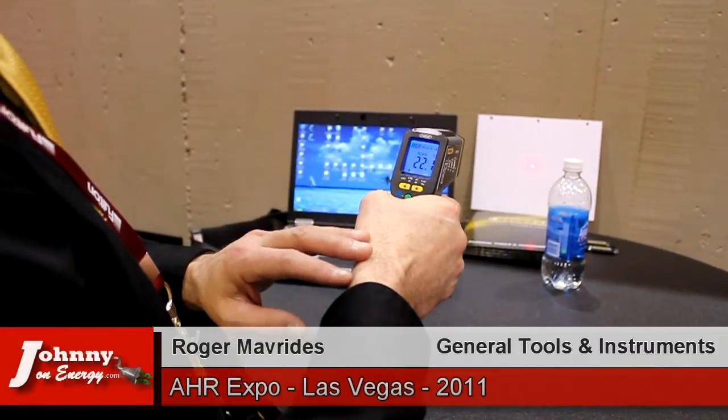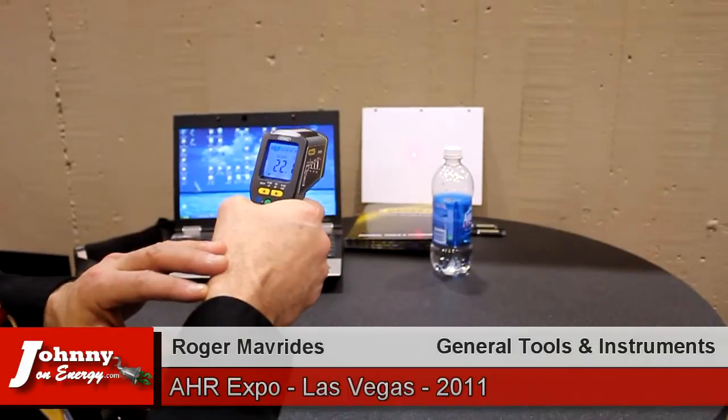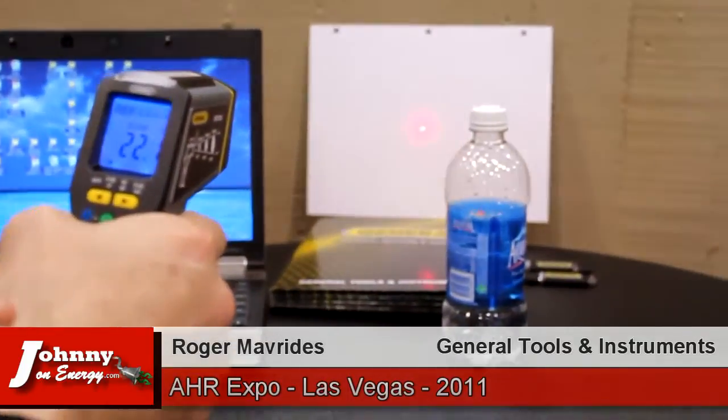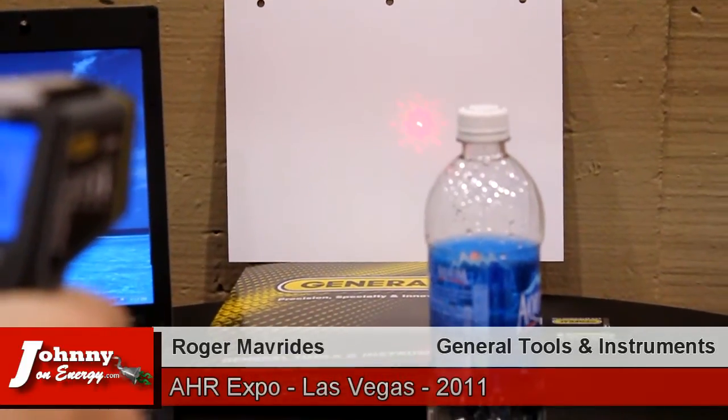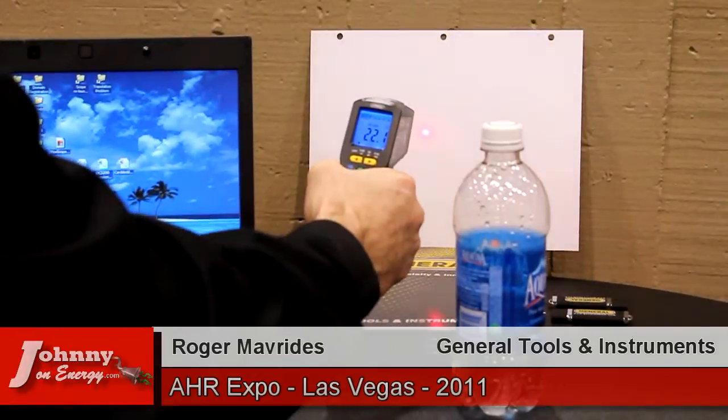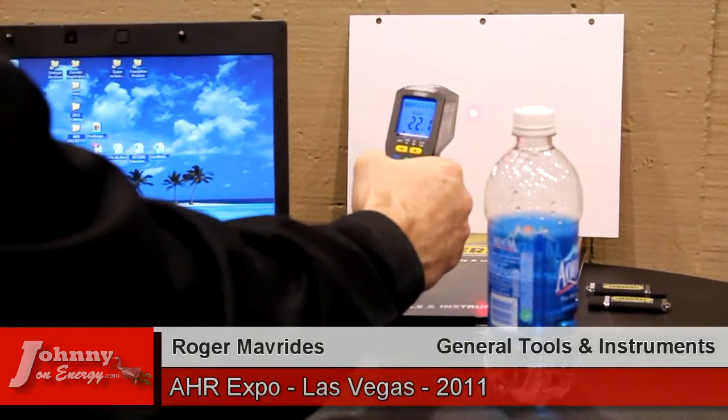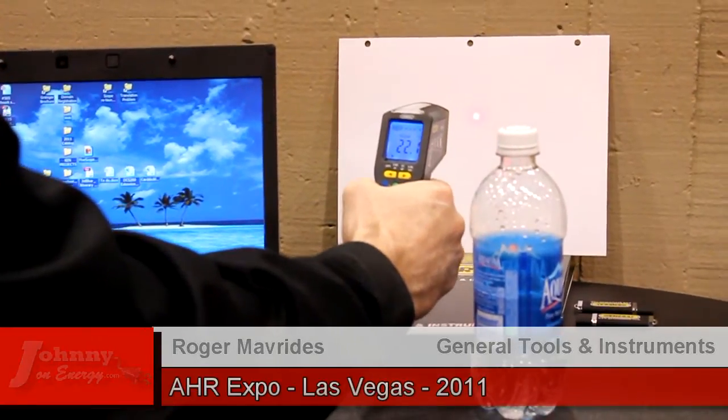One of the unique features of this instrument is its starburst laser pointer and what that does is it represents one half of the target spot size, the diameter. This is an 8 to 1 ratio which means that from 8 inches away the target spot normally is 1 inch. That laser dot is half an inch in diameter.